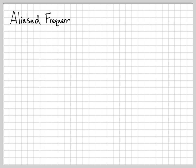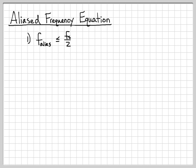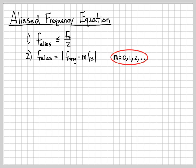Sampling the sinusoid with impulses provides a concrete example of what happens in the frequency domain and why aliasing occurs. Let's work out a little math to find an equation for predicting the aliased frequency. There's a system of equations we can use: first, the aliased frequency is always less than or equal to half the sampling frequency. Second, the aliased frequency equals the absolute value of the original frequency minus m times f_s, where m is a free parameter: 0, 1, 2, 3, etc.